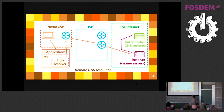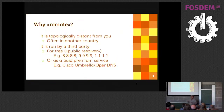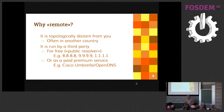A remote resolver is somewhere over the internet — you cross your ISP's network, get somewhere on the internet to the resolver, and it does the queries and sends back the reply. This is the remote DNS resolution model. It's remote because it's generally somewhere else — mostly these services are provided by US companies, so they are on the other side of the Atlantic, even if the servers are physically near you. They are under another jurisdiction. There are so-called public resolvers, like those provided by Google and others like Quad9 and 1.1.1.1, or even paid services.